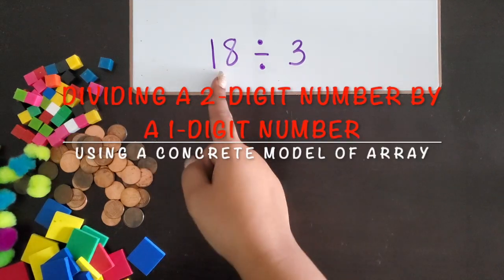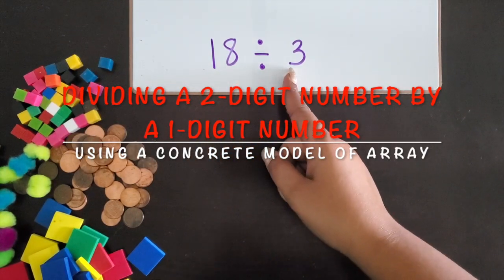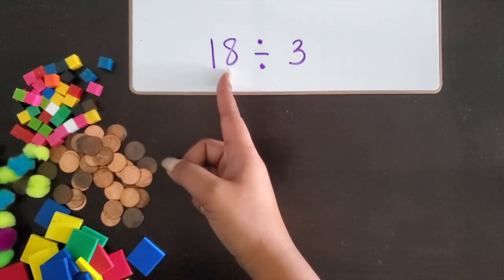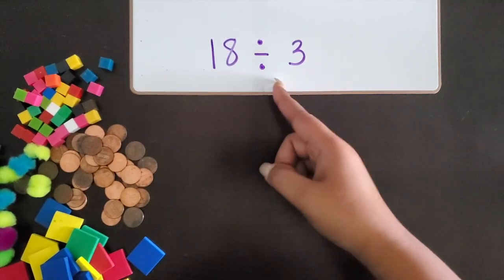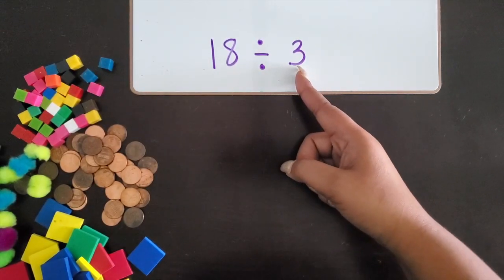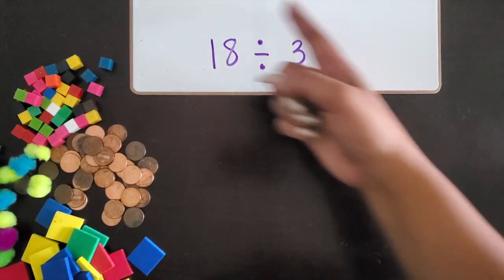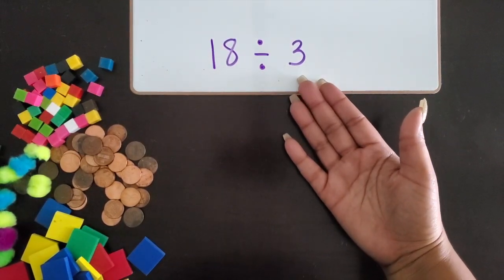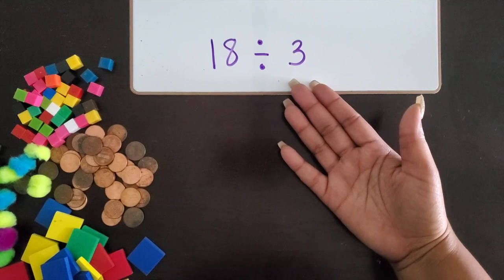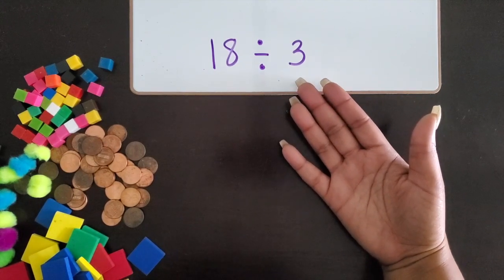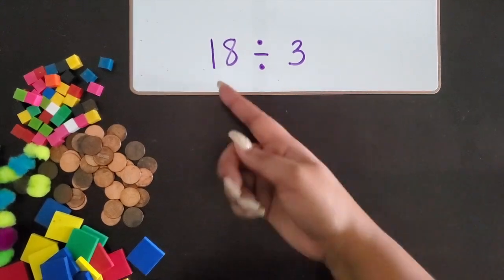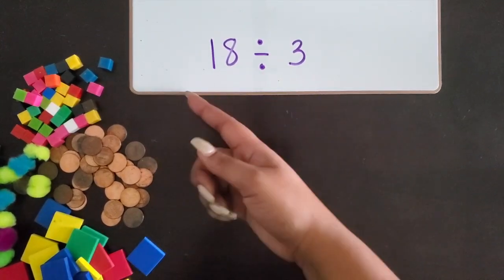We're going to divide a two-digit number by a one-digit number using a concrete model with manipulatives to represent an array in division. I'm going to start with my total and divide it by the number of groups or the number in each group. Right now, because there's no context or story problem, we don't know what that three represents — it could be the number of groups or the number in each group.